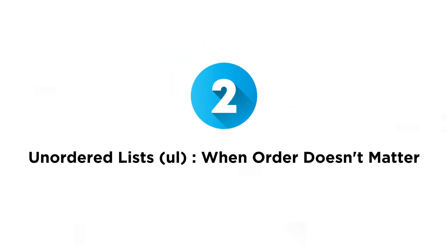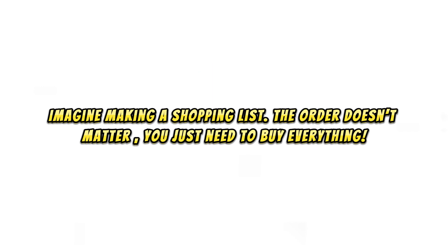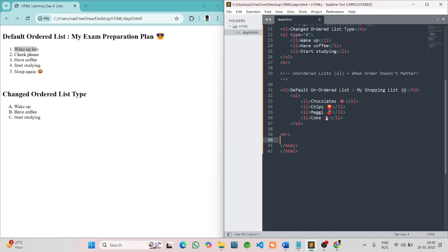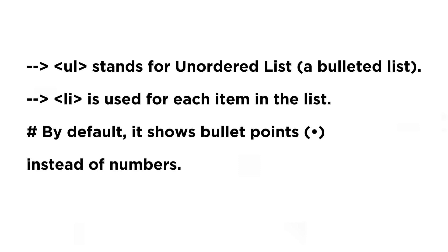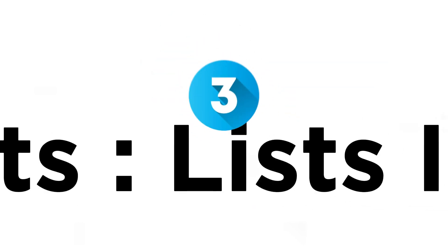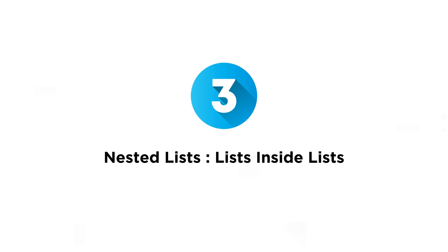Coming to the second point: unordered lists, the `ul` tag. When order doesn't matter, imagine making a shopping list — the order doesn't matter, you just need to buy everything. For lists like this, we use an unordered list in HTML. `ul` stands for unordered list, a bulleted list. The `li` tag is used for each item in the list, and by default it shows bullet points instead of numbers.